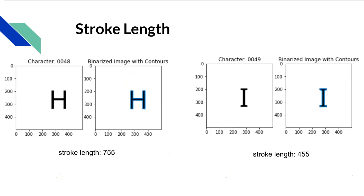H has a stroke length of 755 pixels, whereas I has a stroke length of 455 pixels.